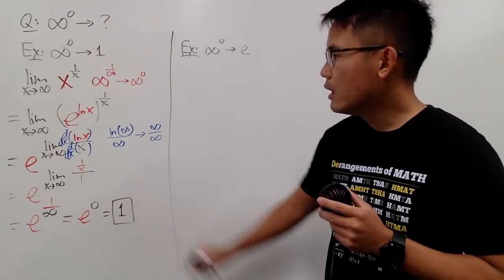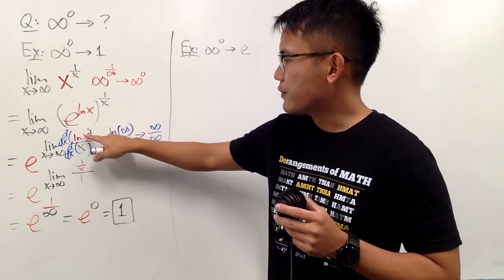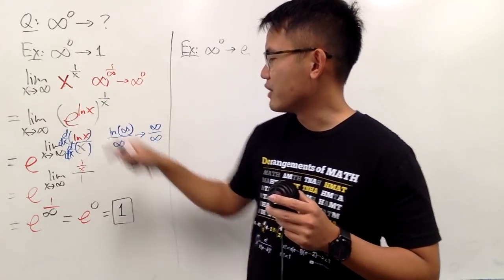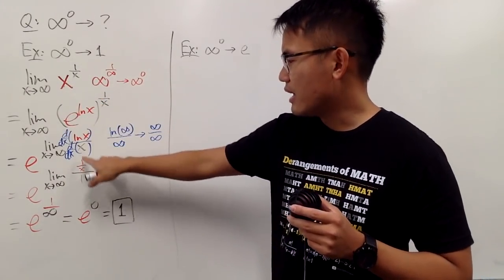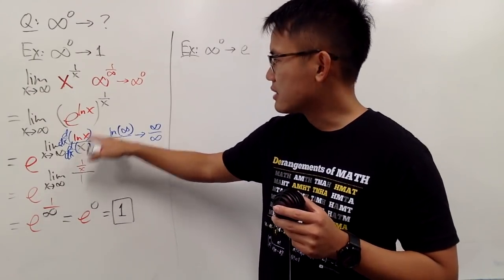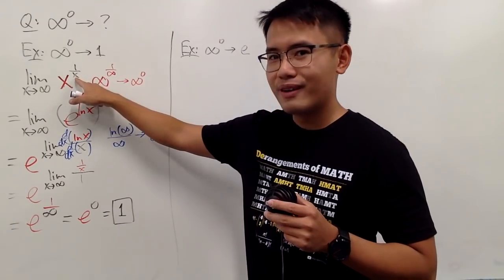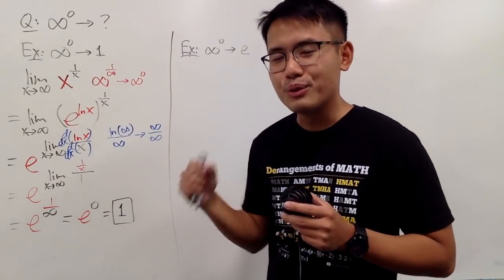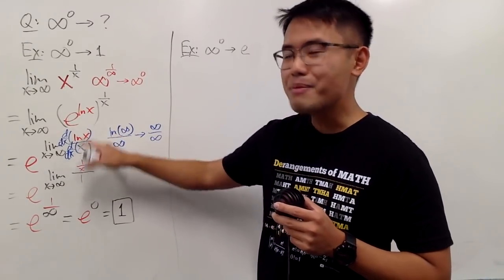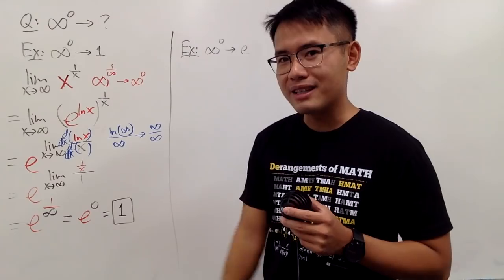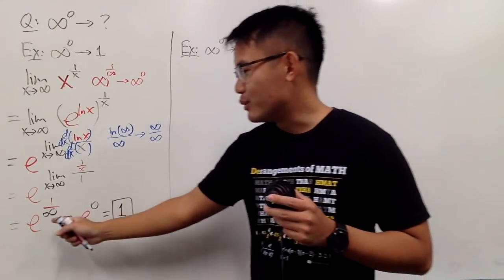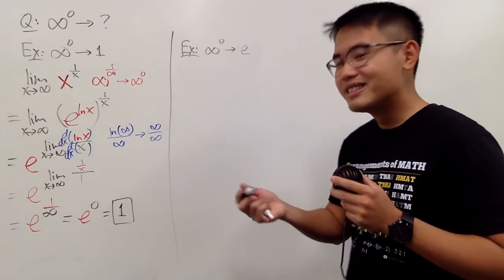Looking at the exponent: I had ln x in the numerator and x in the denominator, and after L'Hôpital's rule the x became 1. But what if I change the denominator x to ln x? Then I'd have ln x over ln x, which cancels to give 1. In the end you do e to the first power, so you get e.